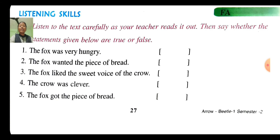Fourth number: the crow was clever. Do you think the crow was clever? Was the crow clever or foolish? Actually, the crow was very foolish. The crow was flattered by the fox, so the statement 'the crow was clever' is false. In the bracket you have to write F-A-L-S-E, false.